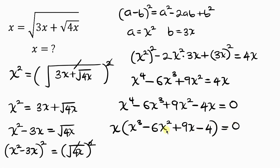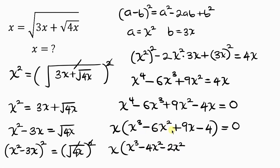Our next step is to simplify what we have inside the bracket. We have x times x cubed. Now negative 6x squared is the same as negative 4x squared minus 2x squared. And plus 9x is the same as plus 8x plus x, then minus 4, equal to 0.